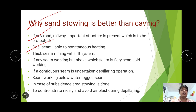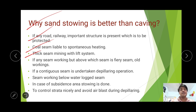Sand stowing is preferred for coal seams that are liable to spontaneous heating. In thick seam mining where extraction with a single lift is not possible, sand stowing operations are used for the lower seam or lower lift or upper lift — for multi-lift working operations. If the seam being worked has a fire seam or old workings above it, sand stowing is used in those cases.